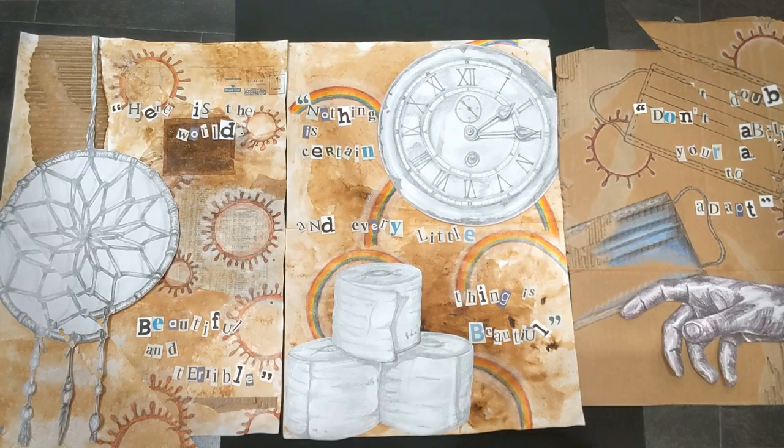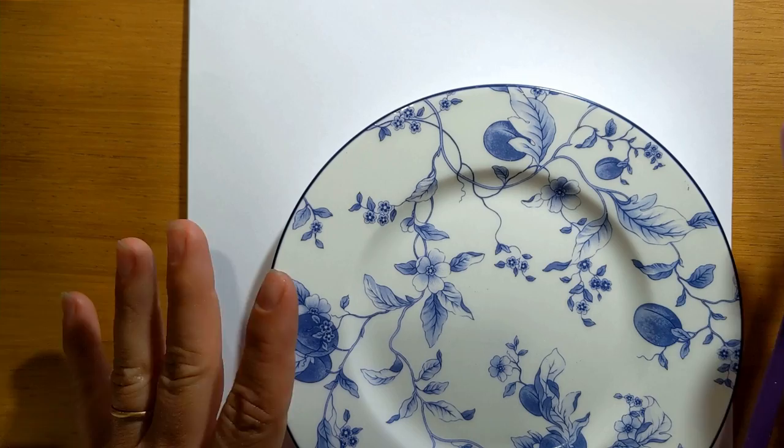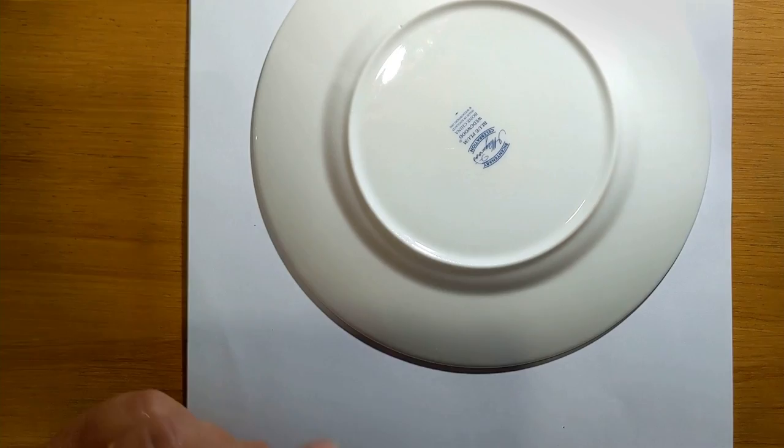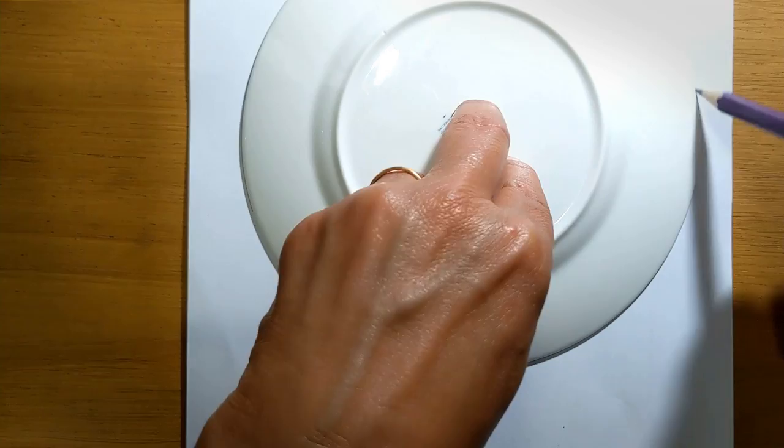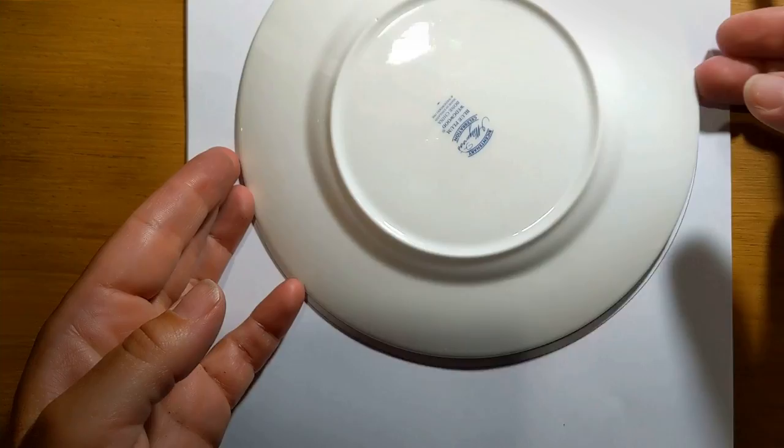Okay, so the third layer is when we're going to do a tonal drawing of objects or object that you associate with this period of time. Now it is completely up to you whether you do one, two, three objects, but what you do need to make sure you are doing is doing these objects in detail.